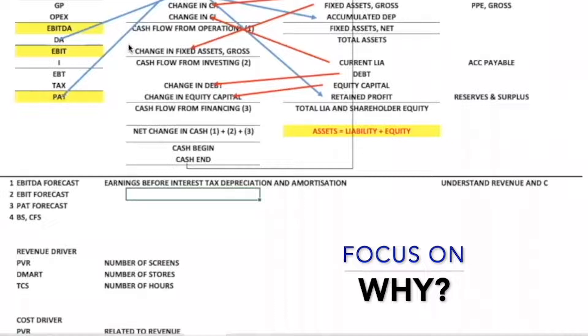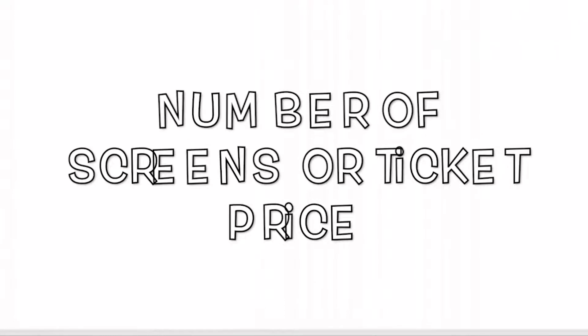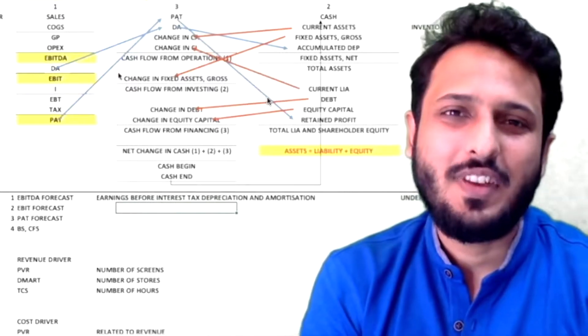The answer behind 'why' will make you understand the business. For example, PVR's revenue might be increasing due to the number of screens or due to the ticket price. Once we start understanding these reasons we are actually getting into the business model. Understanding EBITDA is the most important thing before you start making any model.